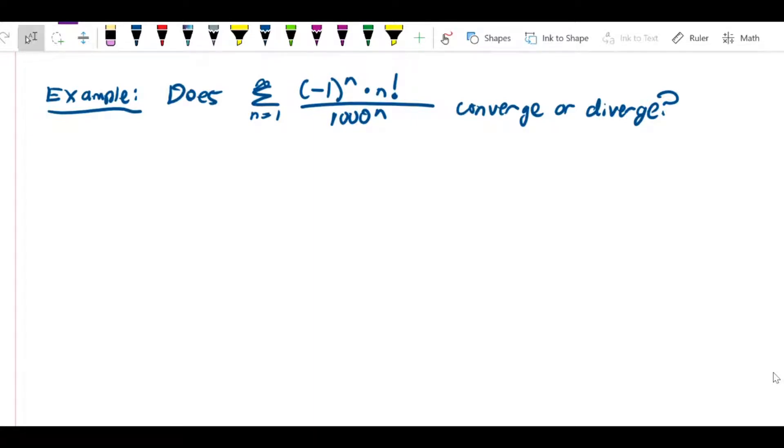So let's do another example, but this one where we have negative terms in the series. So let's ask whether this series, the sum from n equals 1 to infinity of negative 1 to the n times n factorial over 1000 to the n, converges or diverges.